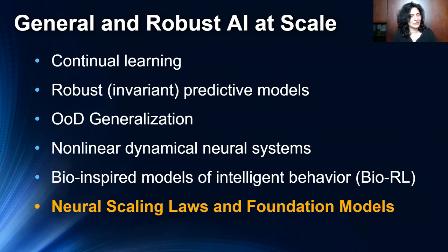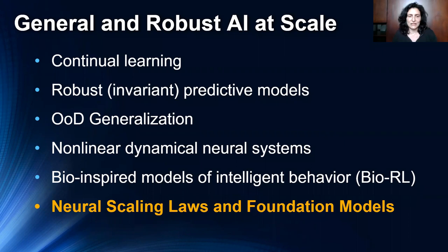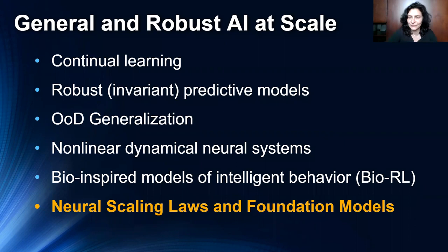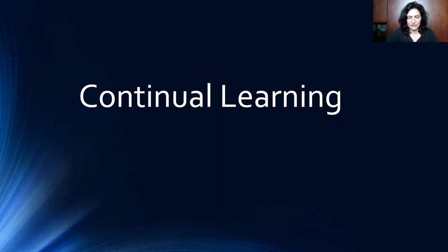The topics I'll cover — continual learning, robust invariant predictive models, and out-of-distribution generalization — all relate to how you make systems that can learn simultaneously or sequentially from a wide variety of datasets to do a wide variety of tasks. I also want to mention modeling complex multivariate time series like brain data using dynamical systems, though I'll focus mainly on generalization, robustness, and large-scale foundation models.